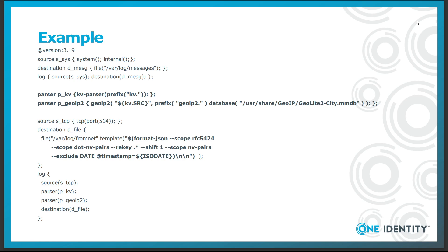You can find more information about template functions in the documentation. Here I want to point you to the "re-k" operator, which removes the leading dot from the name-value pairs. The leading dot is normally replaced with an underscore by syslog-ng, but it has a special meaning in Elasticsearch. We also remove the date macro and include isodate, which is the name expected by Elasticsearch. Finally, we add two line breaks for better readability. Of course, we will remove those when we use the same template to send logs to Elasticsearch.